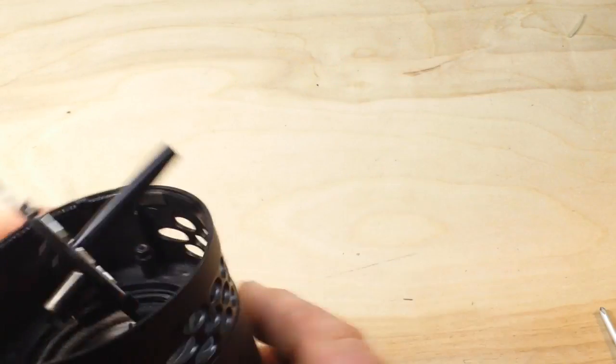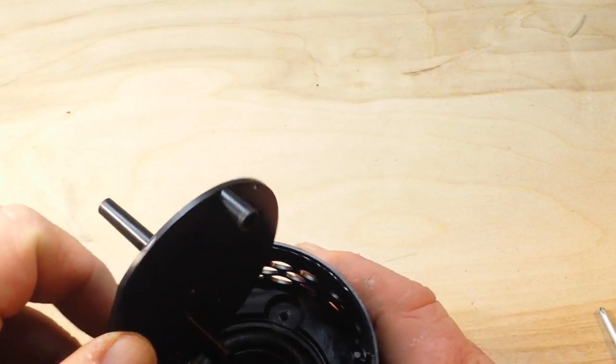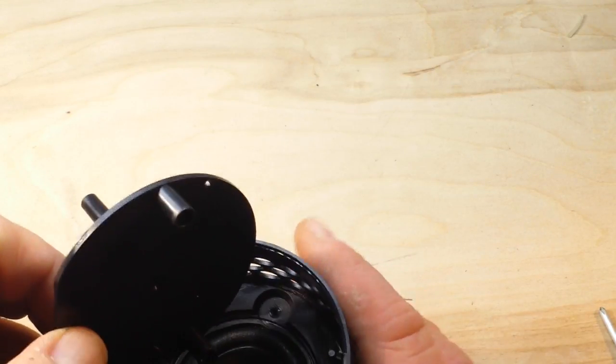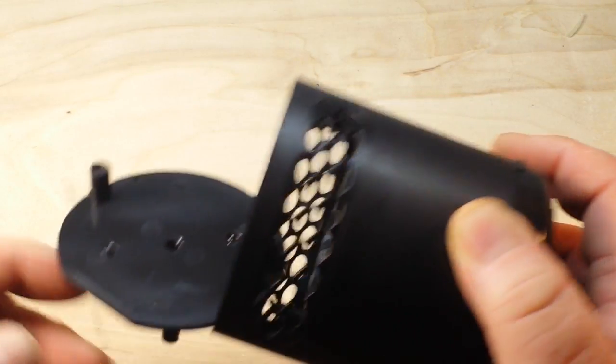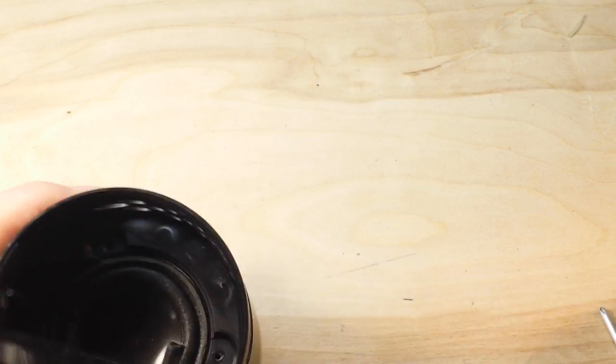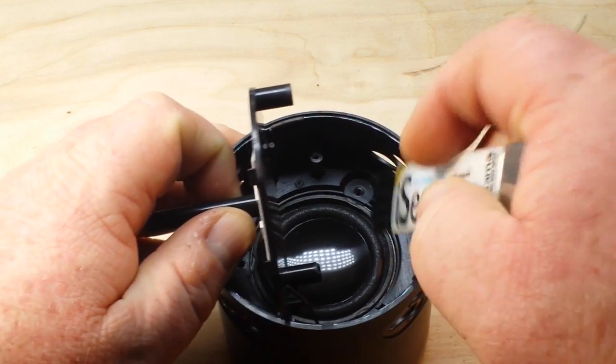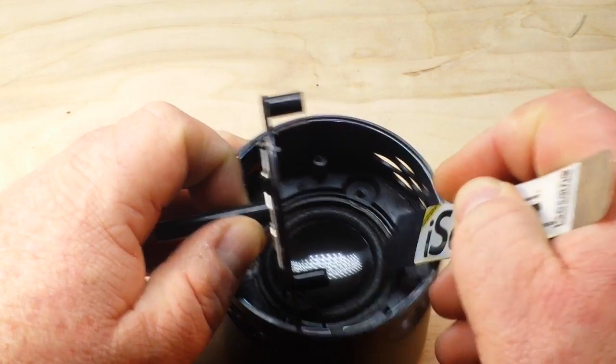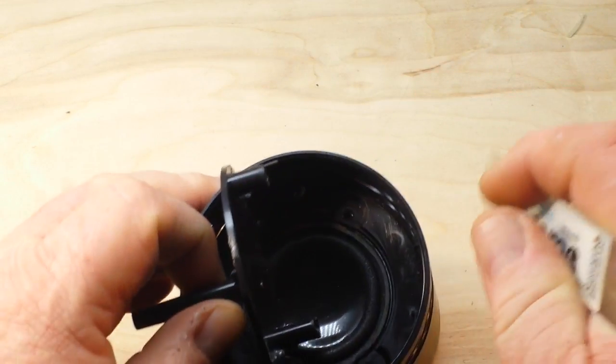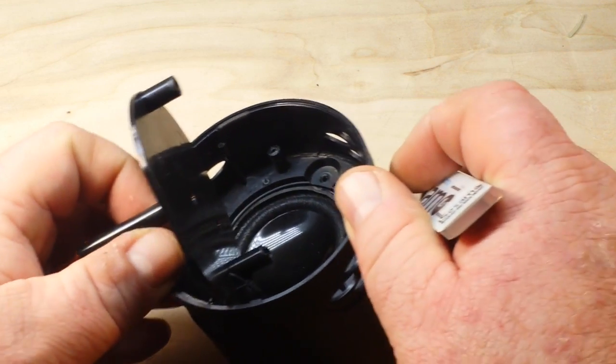Second layer of screws are out. What do we need to do to remove the speaker? Spudger? Hmm, very interesting.